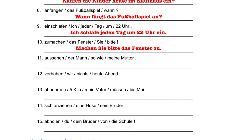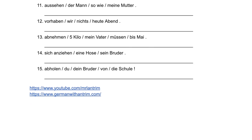In number 11, we have the verb aussehen. Aussehen is also an irregular verb — that is, sehen is irregular — so we have the er/sie/es form sieht. Aus goes at the end of the sentence. So: Der Mann sieht wie meine Mutter aus — the man looks like my mother.